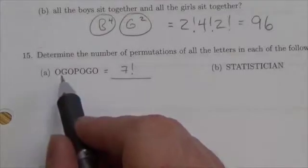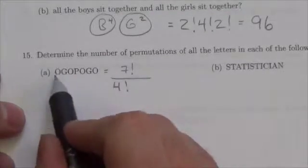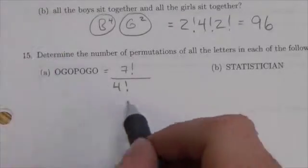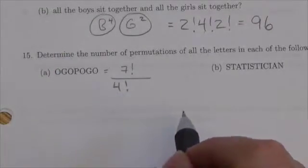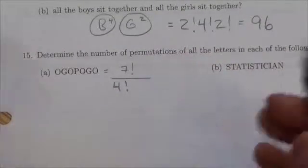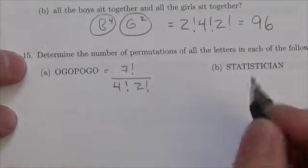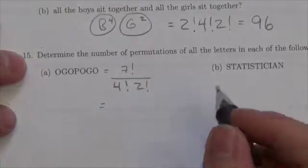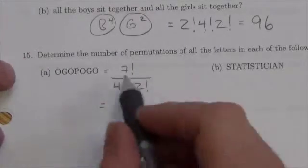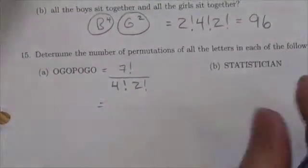But they're not all different. I have got four O's there. So there's four factorial ways I could change the position of the O's, and you wouldn't notice a thing. So I'm going to divide out those four factorial permutations because they're not changing anything. And there's also two G's there. So there's two factorial ways you can do that here. And now I'm just kind of getting rid of, again, the different ways you can permute those G's, because if you switch them, it makes no difference.